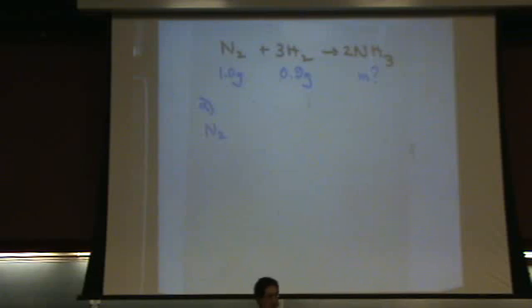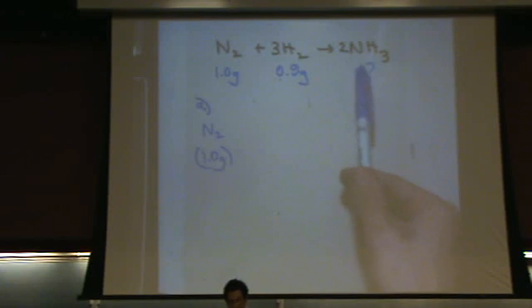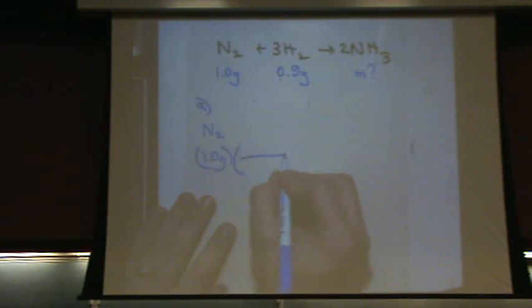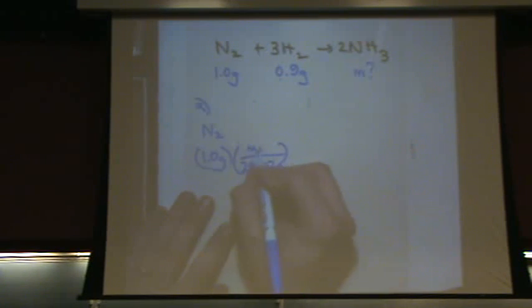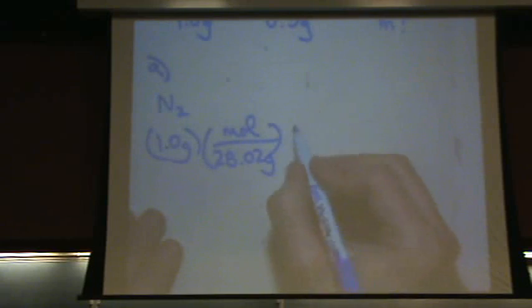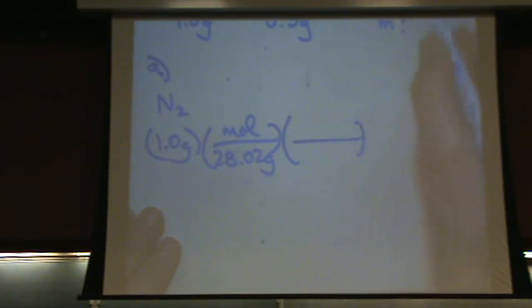So, what you do is you do a stoichiometric problem one at a time. Let's start with N2. You start with one of the reactants for which you're given information, 1.0 grams. What you want to do is convert this to whatever you're asked for. And it can be in mass or moles, but I'm just going to put in mass for the sake of us. So, it's 28.02 grams per mole, the molar mass of N2. So that's moles of N2. I don't want moles of N2. I want moles of ammonia.